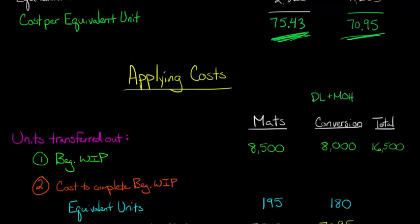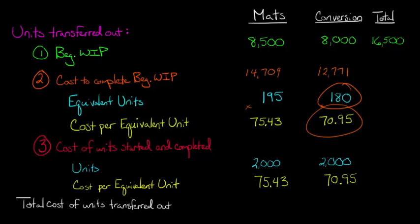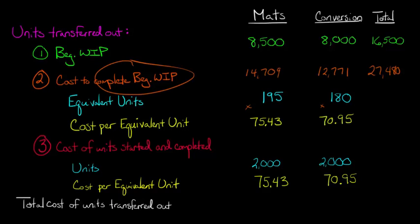We multiply the equivalent units by the cost per equivalent unit that we calculated before. So we get $14,709 cost to complete beginning WIP for direct materials, and for conversion costs $12,771. That $12,771 is just 180 times $70.95, the cost per equivalent unit for conversion costs. Adding those together gives us $27,480 total cost to complete our beginning work in process — that's what it cost to finish those leftover units.